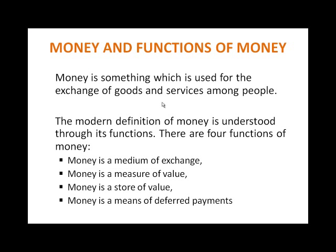Now we describe money and the functions of money. Money is something which is used for the exchange of goods and services among people — anything used to exchange other goods is called money. But this is a narrow concept. The modern definition of money is understood through its functions. Money is not only the medium of exchange; it is also used as a measure of value, a store of value, and a means of deferred payment.